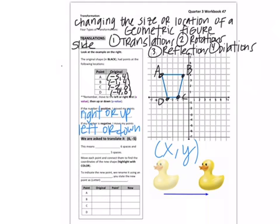So this means right 6 and down 5 spaces. To indicate the new point we talked about this last time, rename it using a prime. You state the new point as the letter prime with the apostrophe. So like A would become A prime. So go ahead and recopy down the ordered pairs from the table above for A, B, C, D down here in the original column.